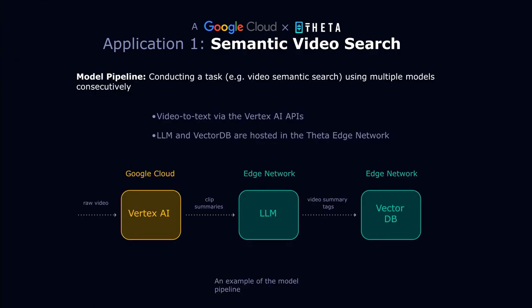How can we implement semantic video search using model pipeline? The pipeline consists of three stages. First, the video description capability provided by Google Cloud via the Vertex AI API suite takes a raw video and produces a summary of each 15-second clip. Next, an LLM running in the Theta Edge network collects the clip summaries and generates tags and a high-level detail summary for the entire video. The embeddings of the tags, clip summaries, and video summaries are stored in a vector database hosted by the Edge network. Finally, when a user types a natural language search, the embedded query is computed in real time and matched against the summary and other information in the vector database for the best video and exact replay location.